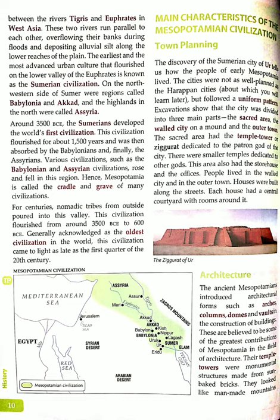People lived in the walled city and the other outer town areas. Houses were built along the streets. Each house had a central courtyard — an unroofed area completely enclosed by walls or buildings — with rooms around it.